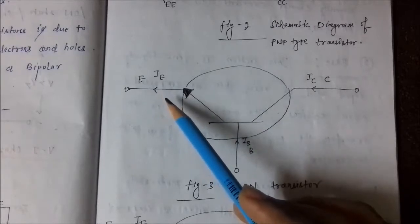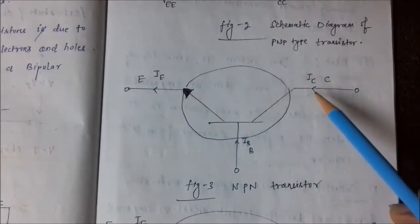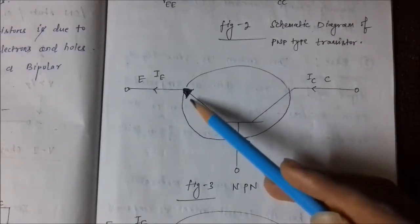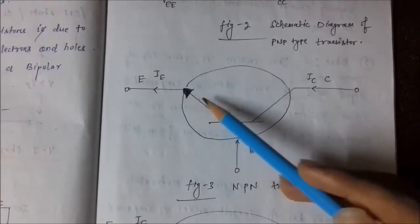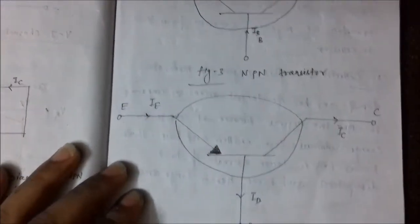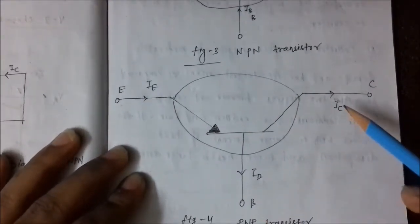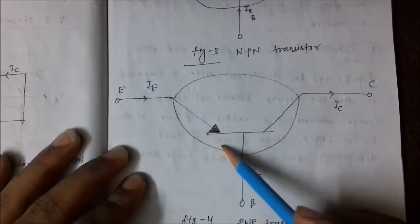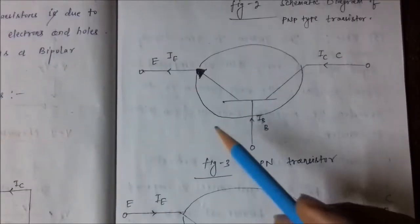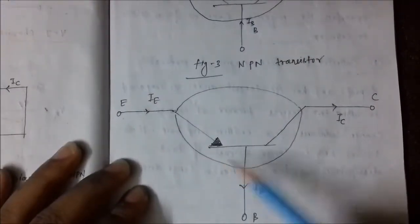The emitter is the source of electrons and the collector acts as a sink for electrons. In the NPN transistor, the arrowhead on the emitter is directed outwards. Whereas in PNP, same convention — emitter, base, collector — but the arrowhead is pointed towards the base. In NPN the arrowhead is away from the base; in PNP it is towards the base.